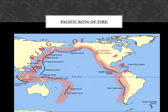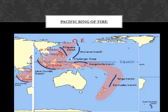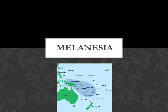Here's the Ring of Fire. The part of the Oceania Ring of Fire that we're going to be looking at is right here, going from New Zealand up to the Philippines. Let's talk about Melanesia — in case you forgot, we talked about Melanesia being that blue oval right above Australia.